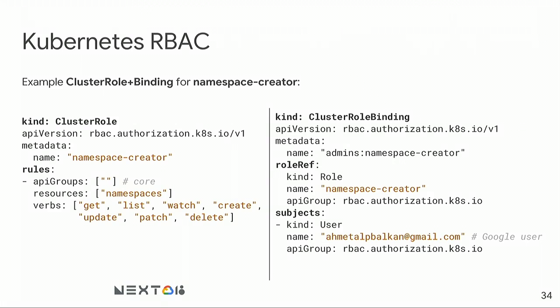Here's an example RBAC — the first YAML of the talk. I'm defining a namespace-creator cluster role that allows get, list, watch, create, and delete operations on namespaces. The cluster role binding assigns this role to a particular Google user — that's my email address. Just as I'm adding myself as a Google user, I can add a group or a Kubernetes service account. This is how you grant access using Kubernetes RBAC.